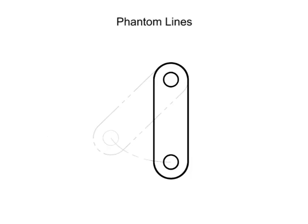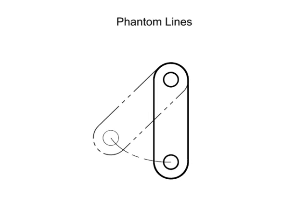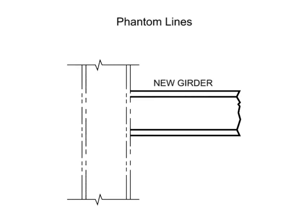Phantom lines are used to illustrate the position of related parts to better show how the part interfaces with existing or missing parts.